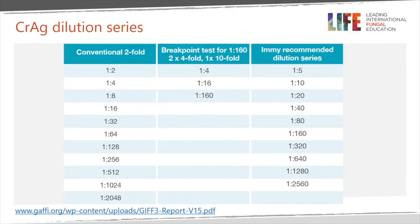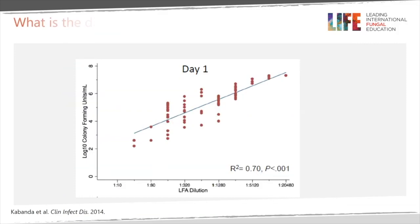Generating the most useful quantitative data of CrAg titers is not yet standardized. This table illustrates some options for dilution series: on the left is the conventional method of two-fold titers, on the right is the IMI recommended dilution series for the lateral flow assay, and in the center is an example of a dilution series. A threshold of 1 to 160 would minimize the need for multiple dilutions. We will review the data behind this threshold of 1 to 160, which is a clinically valuable threshold to guide management.